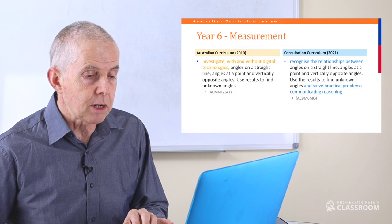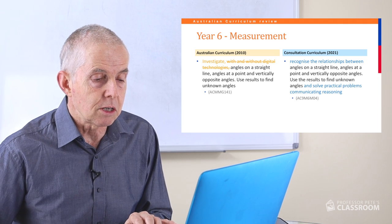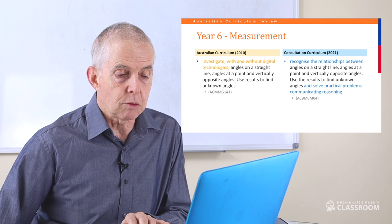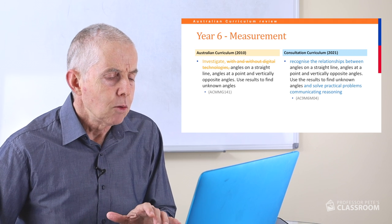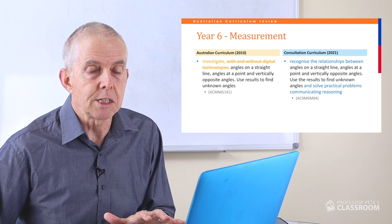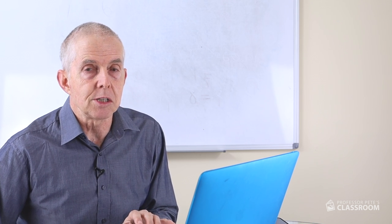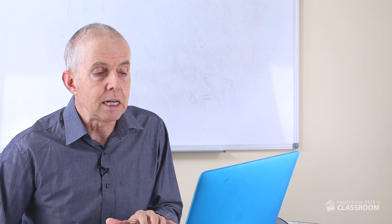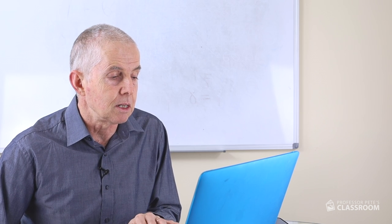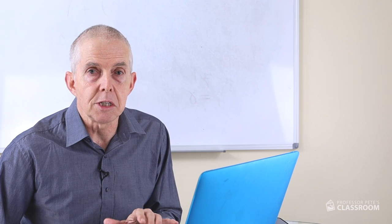The fourth measurement descriptor states: recognise the relationships between angles on a straight line, angles at a point, and vertically opposite angles; use the results to find unknown angles and solve practical problems communicating reasoning. This is good — almost the same as the old one with a little more detail. What's been removed is 'with and without digital technologies.' I think it's preferable to let teachers decide when they will use digital tools rather than stipulating when they are expected to be used.